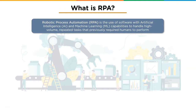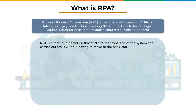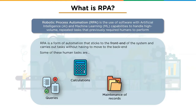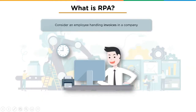RPA is the use of software with AI and machine learning capabilities. These softwares handle high-volume, repeated tasks that previously required humans to perform. RPA approaches the front end only, making it easier for users. Essentially, RPA is a configuration that automates repetitive tasks such as answering queries, making calculations, maintaining records, or handling transactions.